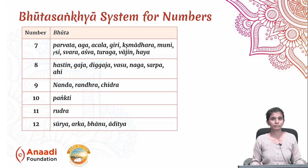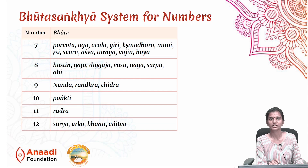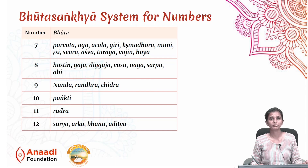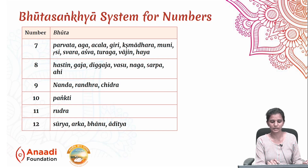Swara represents seven because in Carnatic music there are Saptaswaras. Ashwa, Turaga, Vajin, and Haya all mean horse — the chariot of Suryadeva has seven horses, so these represent seven. Hastin, Gaja, and Diggaja mean elephants. There are eight directions — the Ashtadik — guarded by elephants and serpents in our tradition. So these words represent eight. Likewise, Naga, Sarpa, and Ahi, which mean snakes, also represent eight.